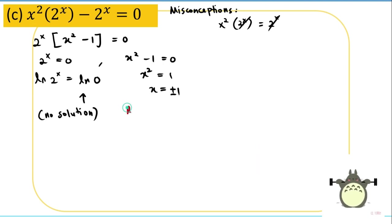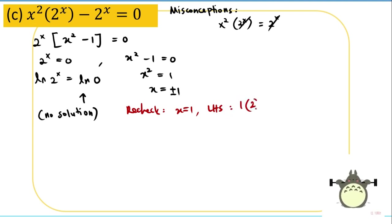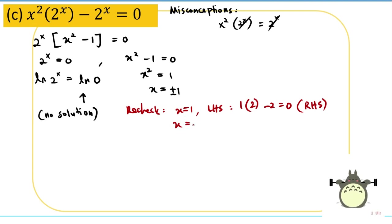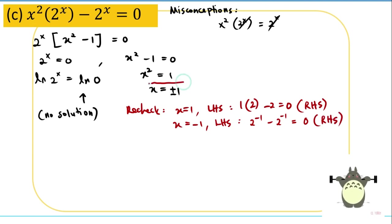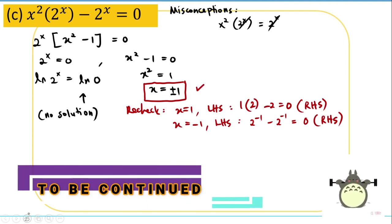Checking x = 1: left-hand side gives 1 · 2 − 2 = 0, matching the right-hand side. Checking x = −1: left-hand side gives 2^(−1) − 2^(−1) = 0, also matching. Therefore both x = 1 and x = −1 are accepted. See you in the next video, bye!